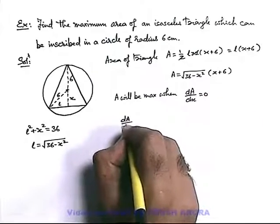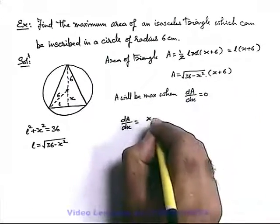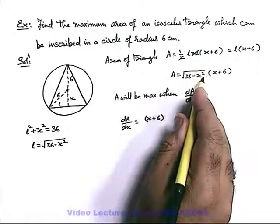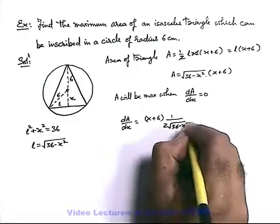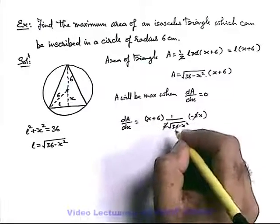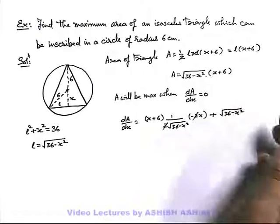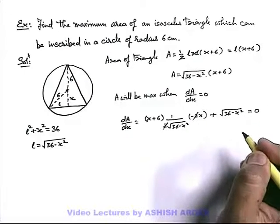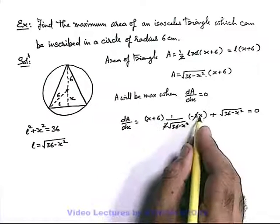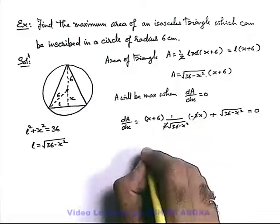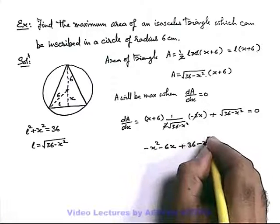Calculating dA by dx using the product rule: we keep (x plus 6) constant and differentiate root(36 minus x²), giving (x plus 6) times [1 over (2 root(36 minus x²)) times minus 2x], plus root(36 minus x²) times 1, all set to zero. Simplifying, this gives minus x squared minus 6x plus 36 minus x squared equals zero.